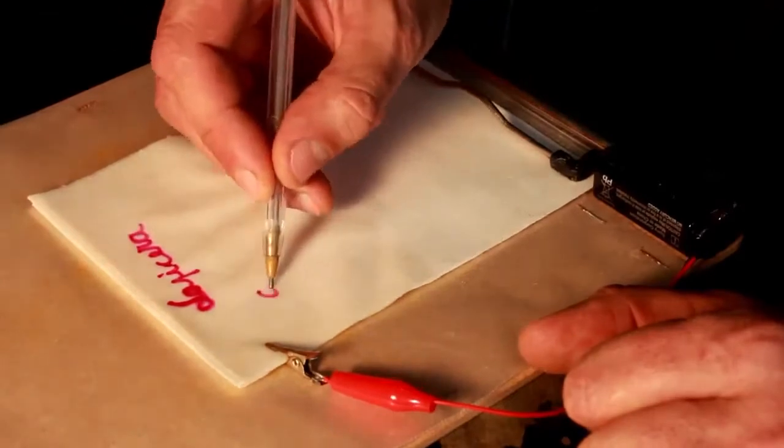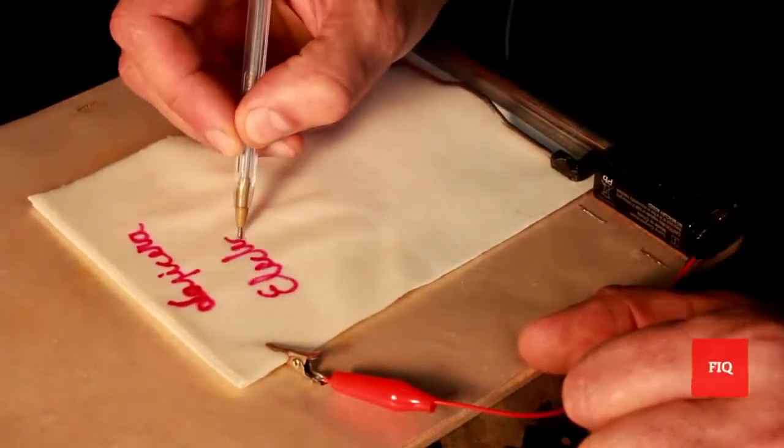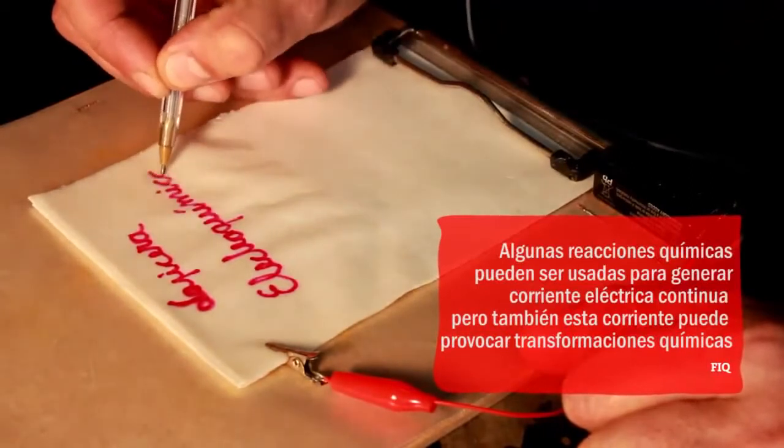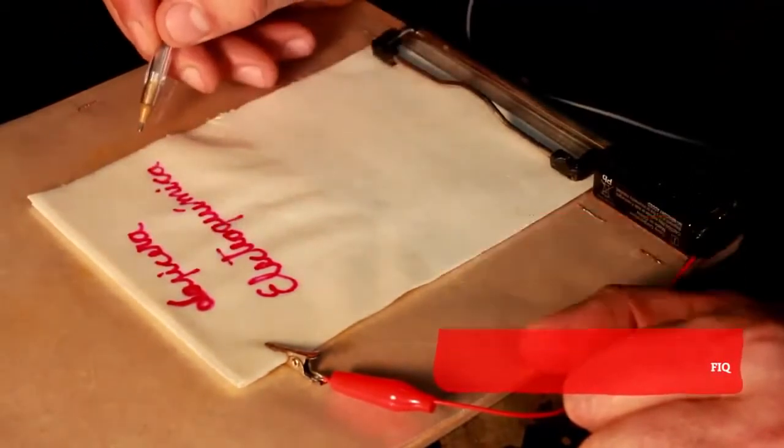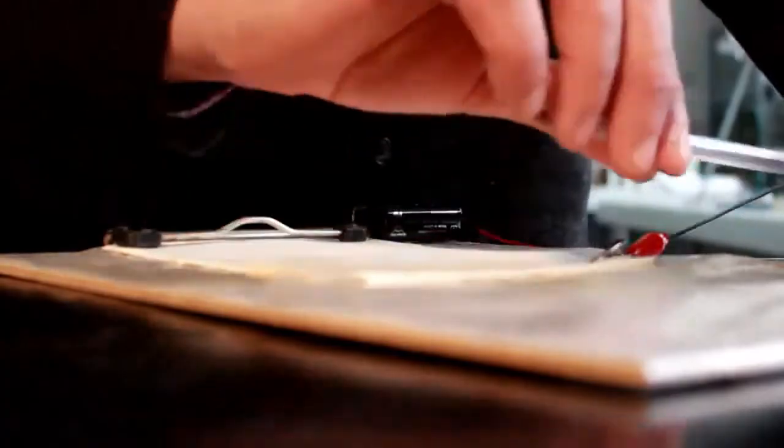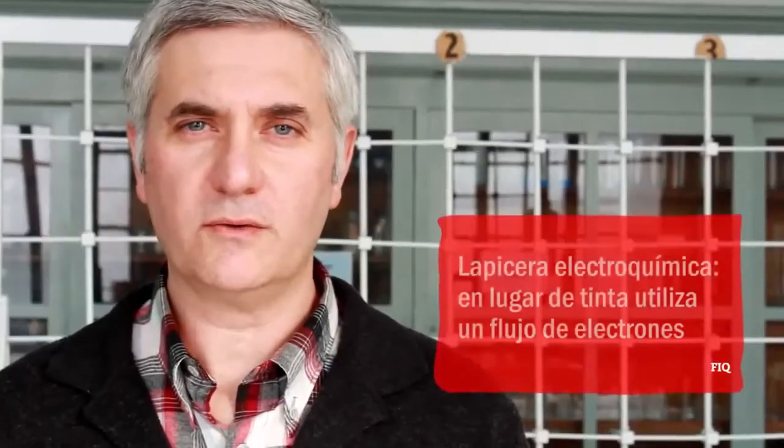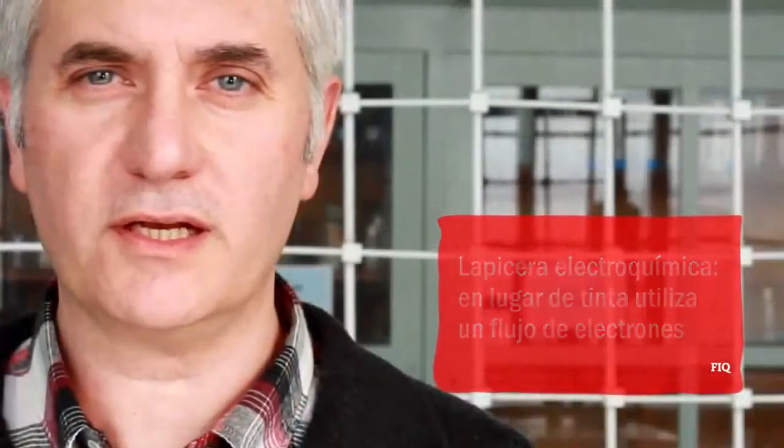¿Cómo hacer una lapicera electroquímica? Algunas reacciones químicas pueden ser usadas para generar corriente eléctrica continua, pero también esta corriente puede provocar transformaciones químicas. Hoy vamos a hacer una lapicera electroquímica que en lugar de tinta utiliza un flujo de electrones.